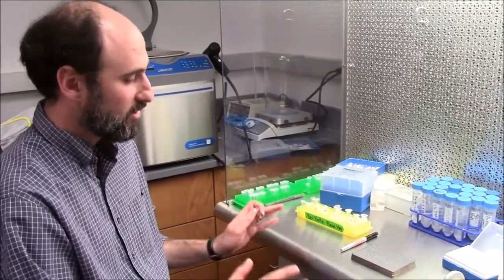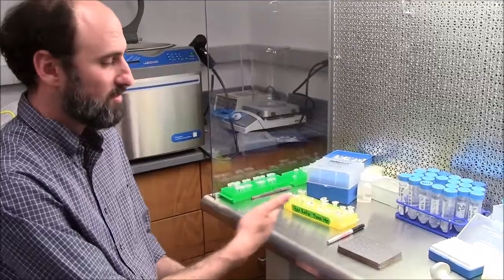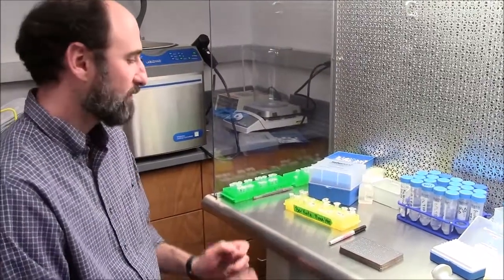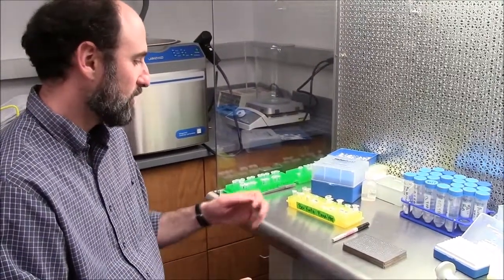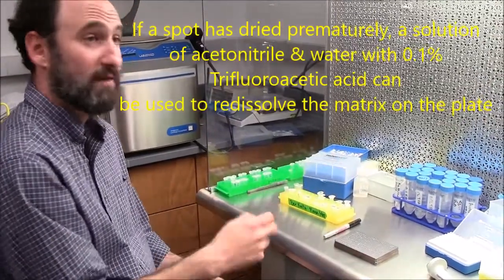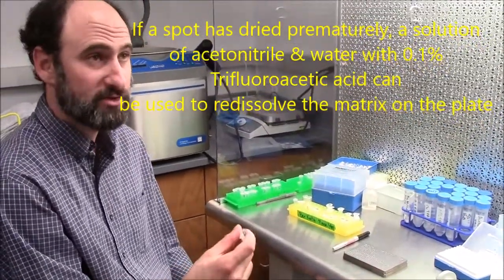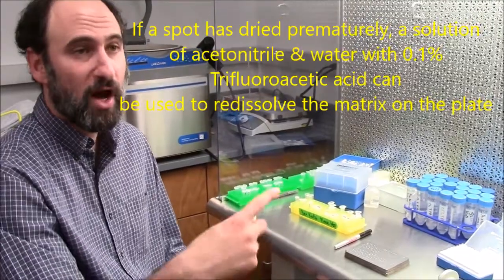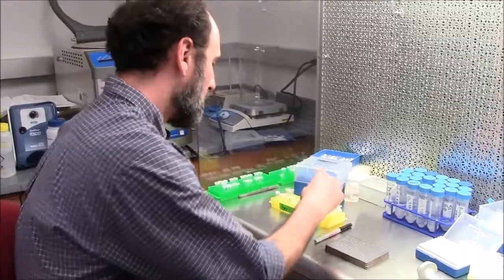Try to keep things very uniform. I'll try to do maybe five spots in a row. If they ever look like you're getting differential drying, you can always use a solution of 50-50, 0.1% TFA and acetonitrile, the same solution the matrix is dissolved in, and just recrystallize your spot. And that will get them all redry back exactly how they're supposed to be.